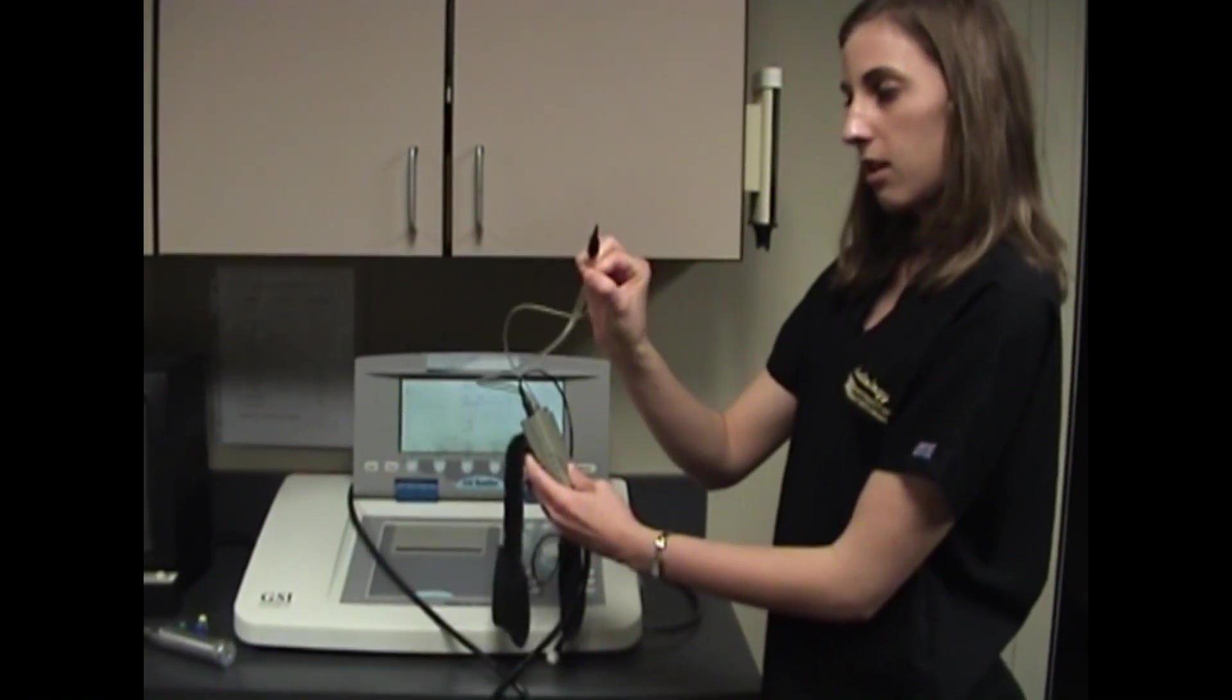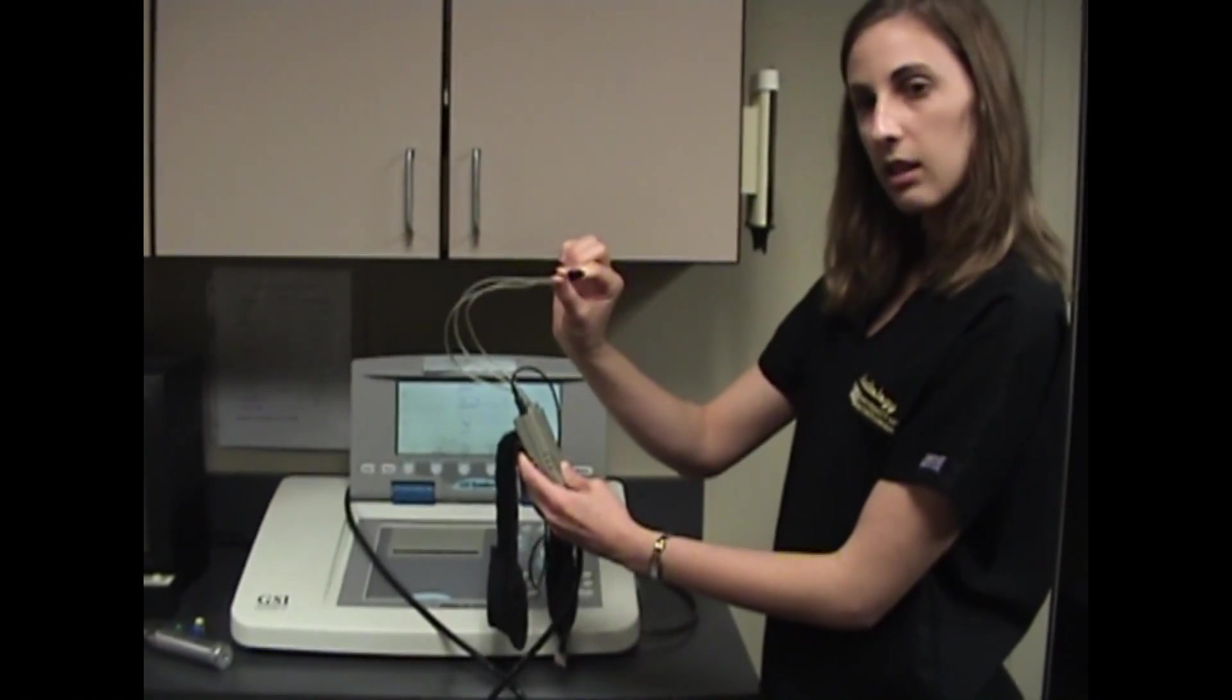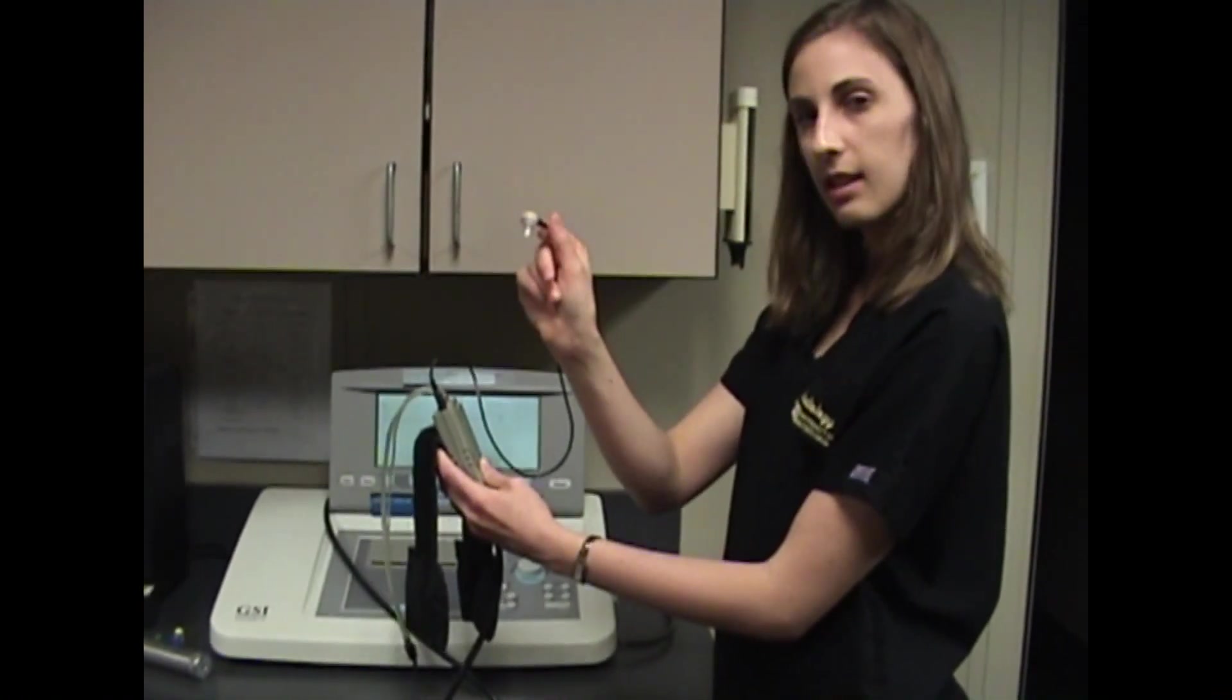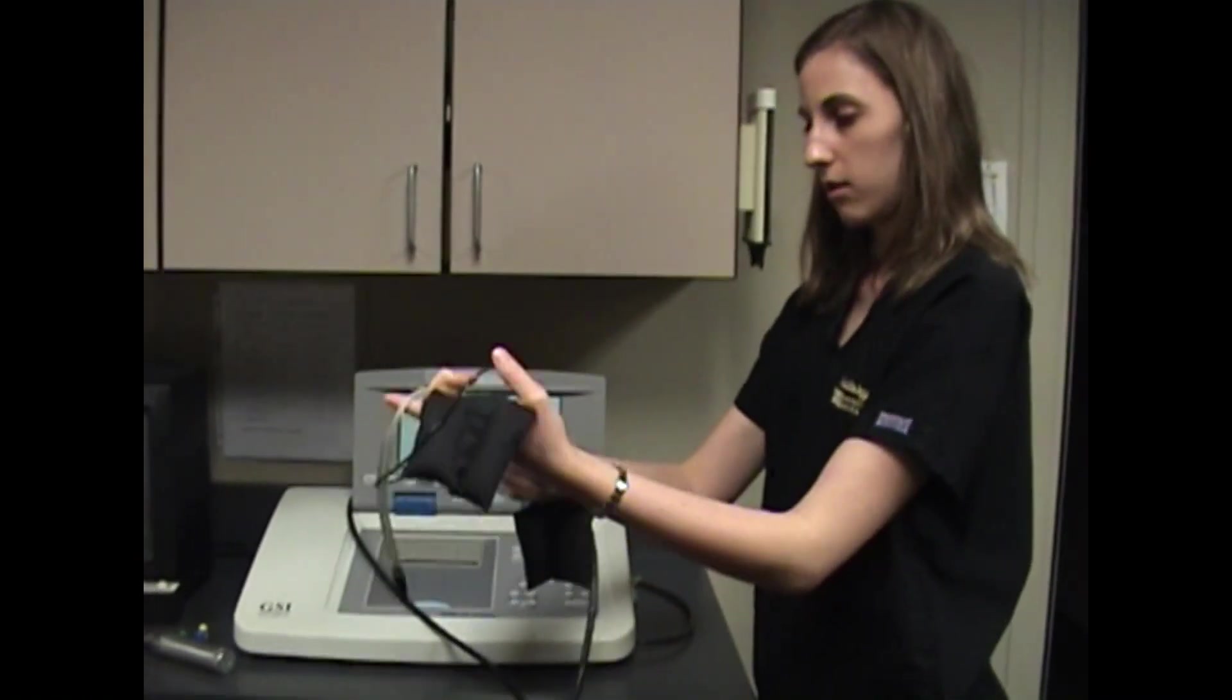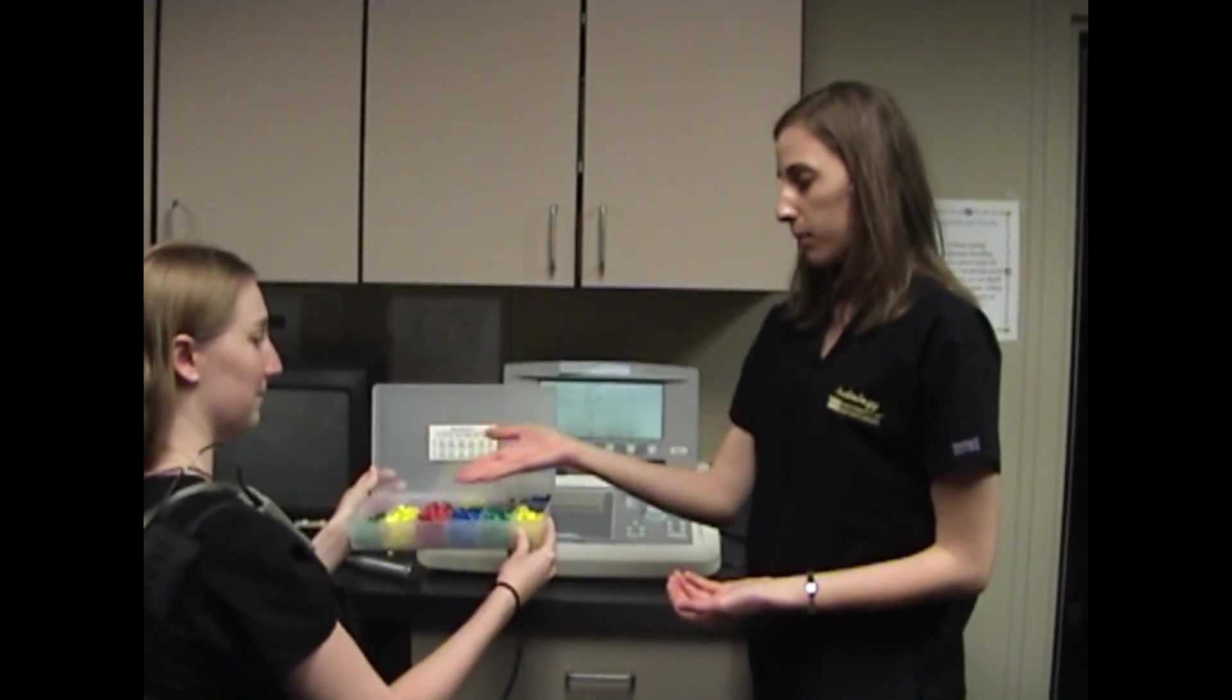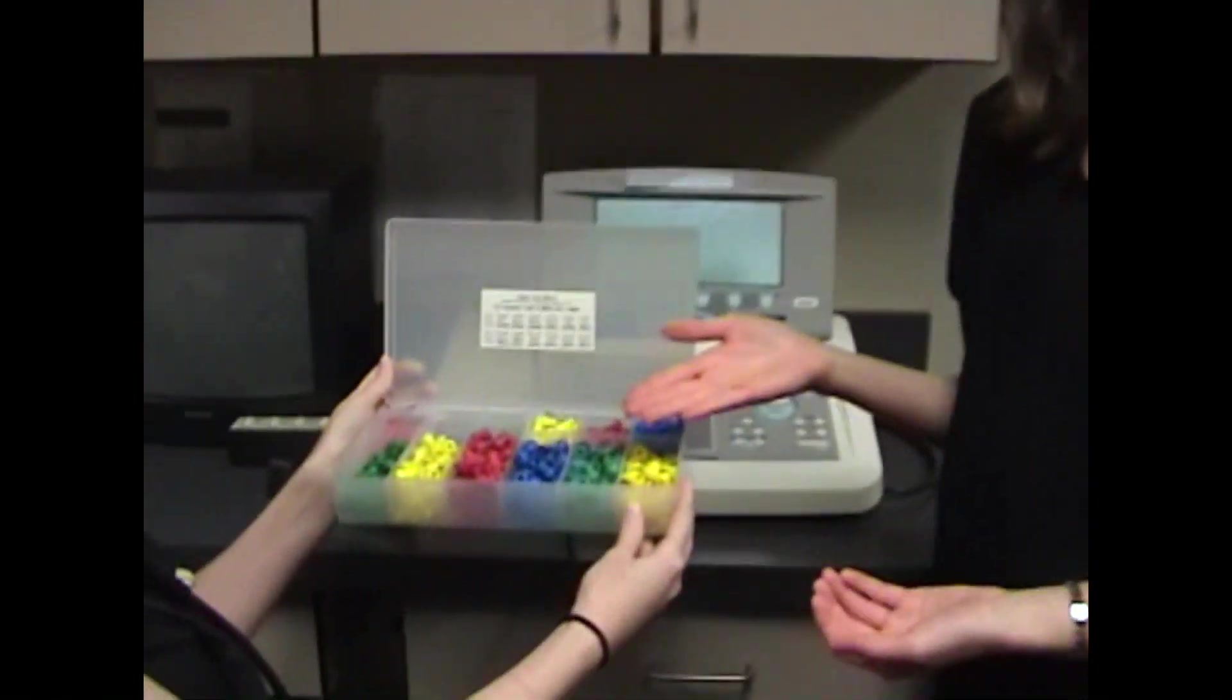Right here we have the tympanometer part, which is also for the ipsilateral ear for doing acoustic reflexes. The contralateral probe goes on this side for the opposite ear.